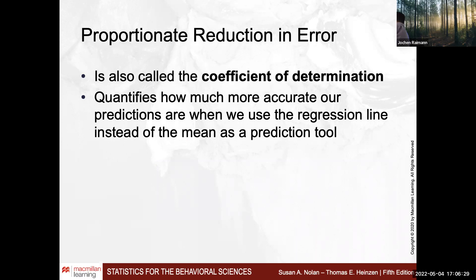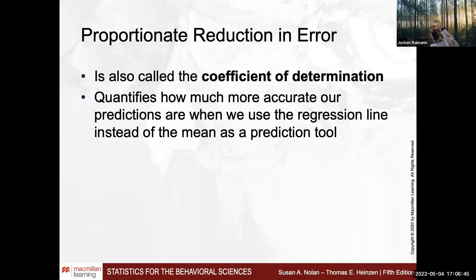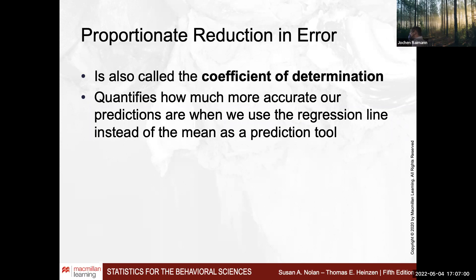That marker is the proportional reduction in error, quantified using the coefficient of determination. In its simplest form — R-squared in univariate analysis where you only have one independent variable — it is essentially the squared correlation coefficient. This is NOT correct for multivariable regression; it is only true in simple bivariate (two-variable) regression analysis.